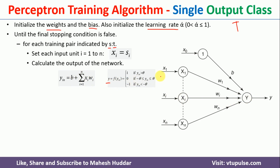We choose a threshold value denoted as theta. If y_in is greater than the threshold, the calculated output is 1. If y_in is in the range of minus theta to plus theta, the output is 0. If y_in is less than minus theta, the output is -1. These are the three possible outputs.